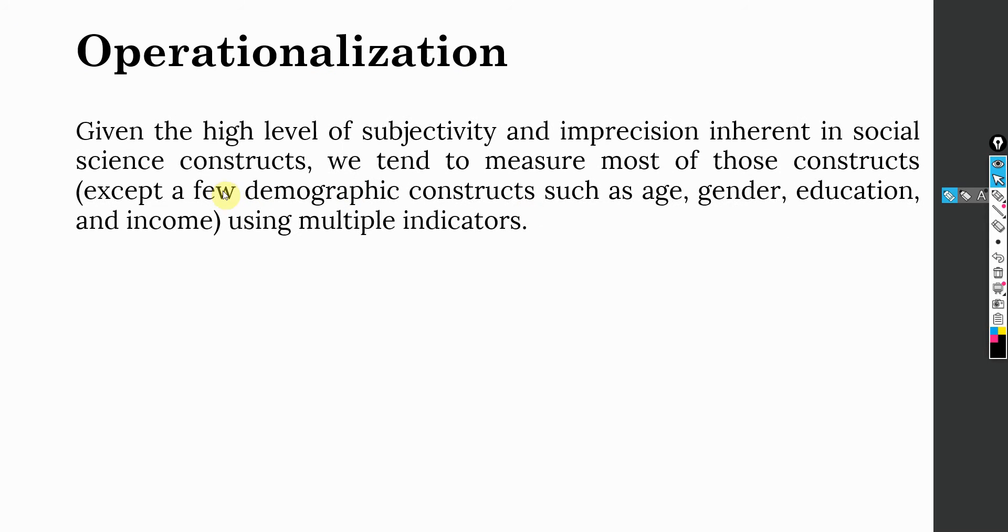Given the high level of subjectivity and imprecision inherent in social science constructs, we tend to measure most of those constructs except for few demographic constructs like age, gender, education and income using multiple indicators. If you filled a questionnaire, let's say if somebody is asking about organizational commitment, they normally tend to ask three to four questions. If they are asking about organizational performance, they tend to ask about three to four questions as well.